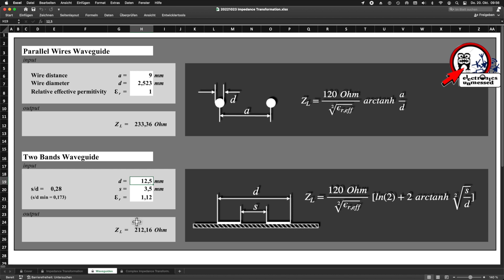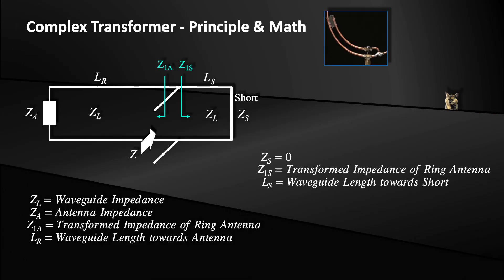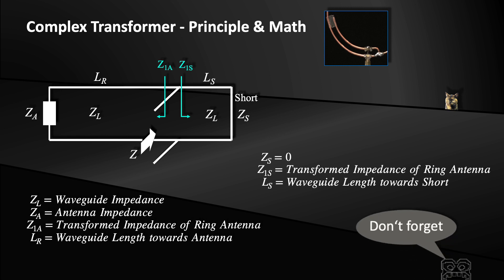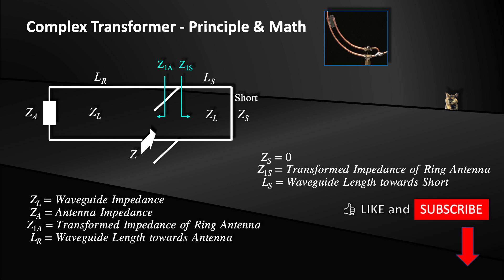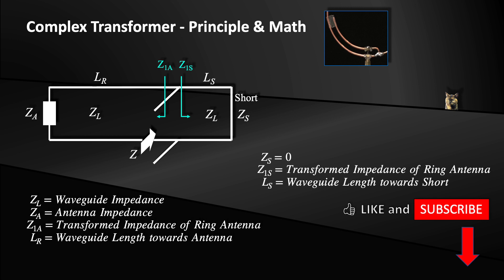Therefore, an effective relative dielectric constant is applied — I estimated it here at 1.12. With that we can calculate an impedance matching network for a wire antenna or a printed board antenna quite well. If you like the channel, please like the video and subscribe to the channel.